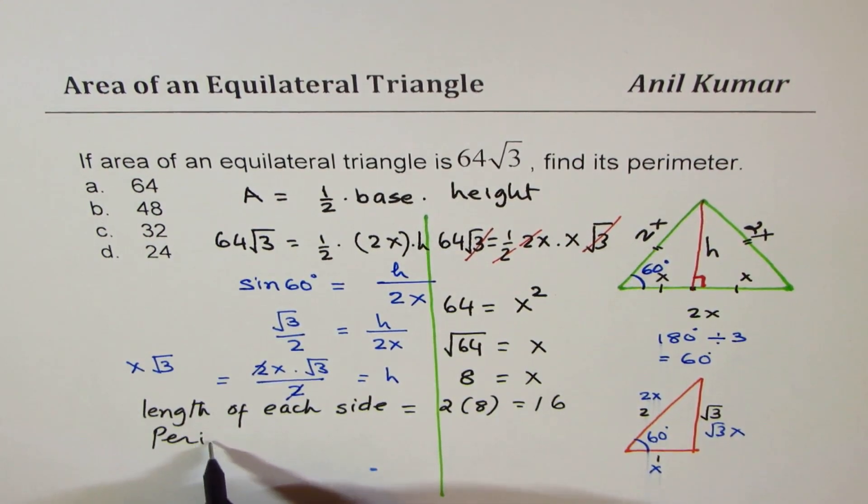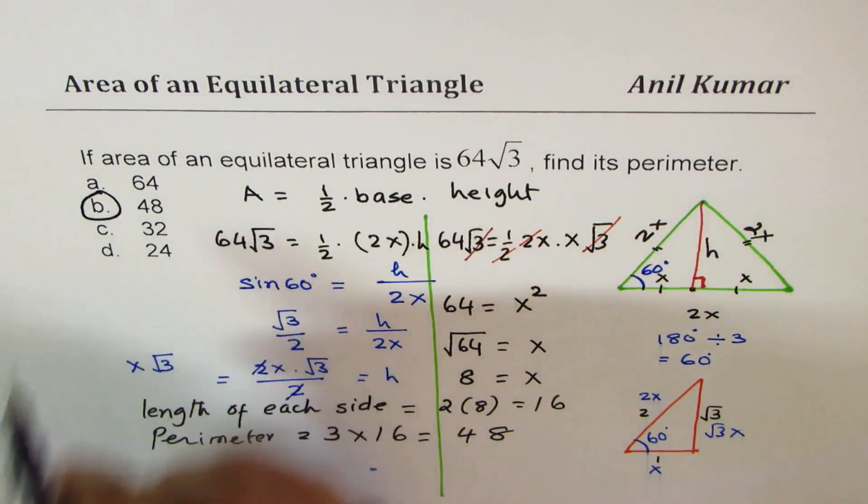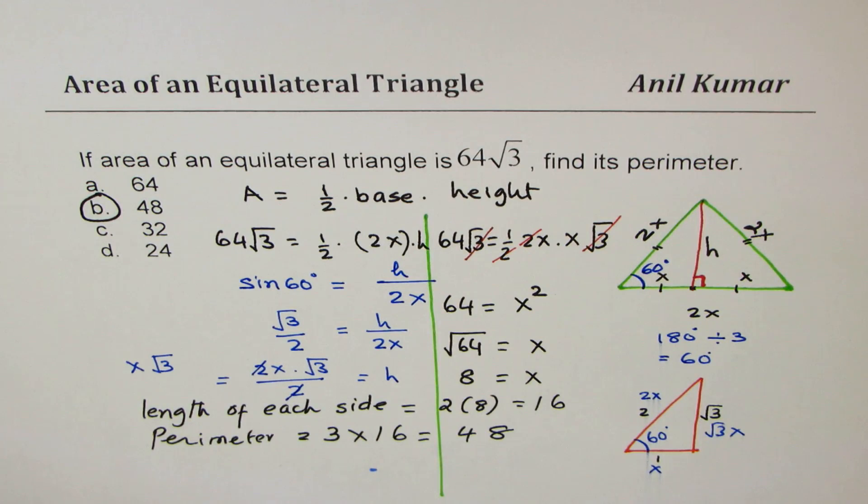Therefore perimeter is equal to 3 times 16. So it becomes 48. So 48, which is option B, is the right option. But I hope the method by which we got this answer is absolutely clear.